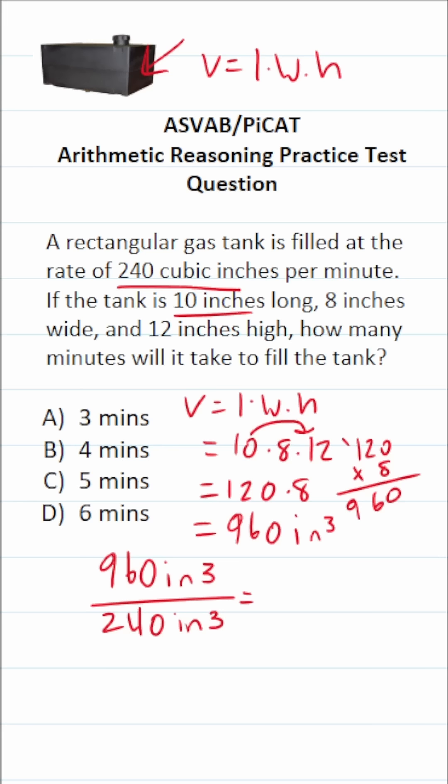So we can cross out these corresponding units as well as these corresponding zeros. And that's going to leave us with 96 divided by 24.